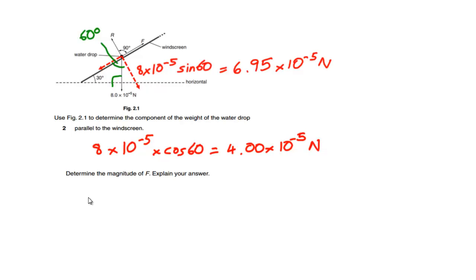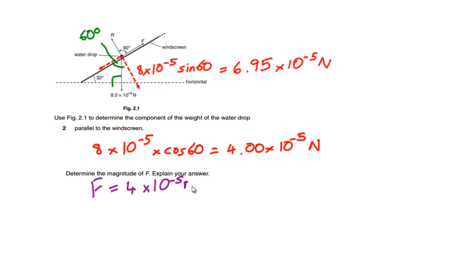The final part of this question asks us to determine the magnitude of the force F — the frictional force acting up the windscreen. To do this we need to look at the forces acting. We can now ignore the weight acting down because we have split it into its parallel and perpendicular components. Acting parallel to the windscreen we have just two forces: the frictional force going up the windscreen and the component of the weight acting parallel to the windscreen. Therefore, in order for equilibrium, this frictional force must be equal to this component of the weight parallel to the windscreen. So F equals 4 times 10 to the minus 5 newtons.